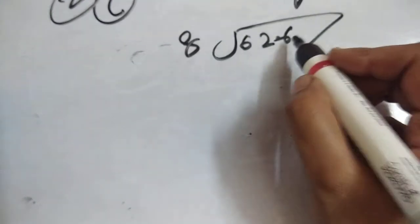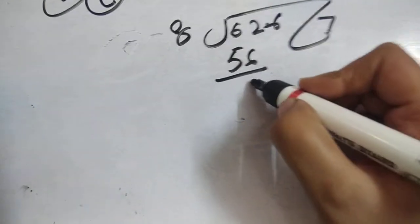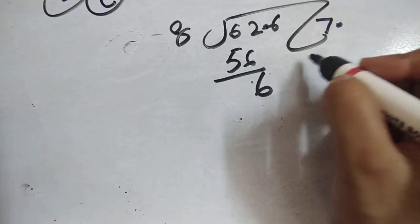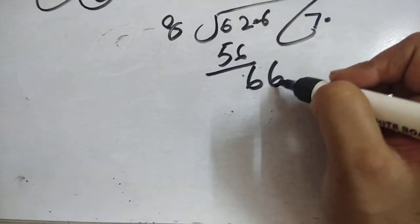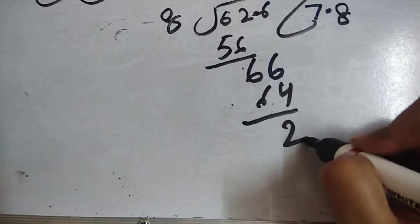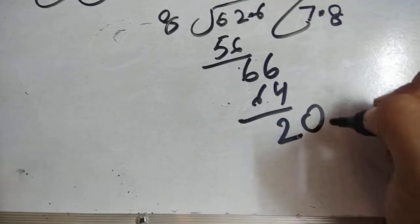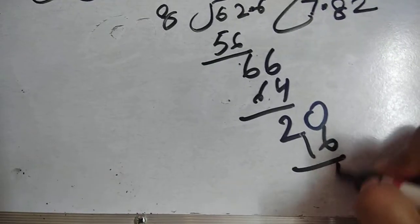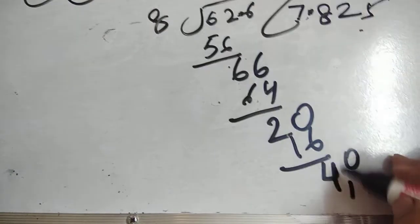For 62.6 divided by 8: 8 goes into 62 about 7 times — 8 times 7 is 56, remainder 6. We put the dot, bring down 6, then 8 goes into 64 giving remainder 2. We take 0 from decimal, it becomes 20, then 8 twos are 16, remainder 4. Take 0 again, 5 times gives 40. This is your answer.